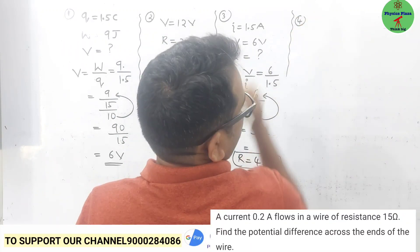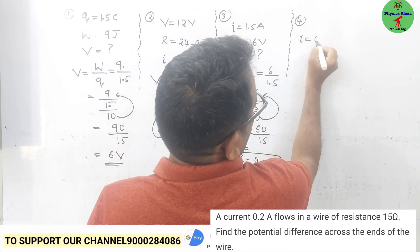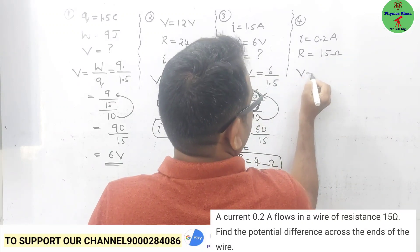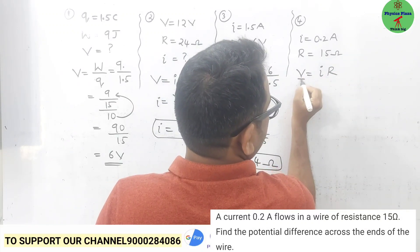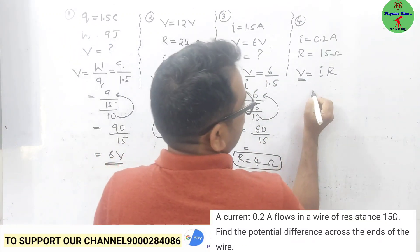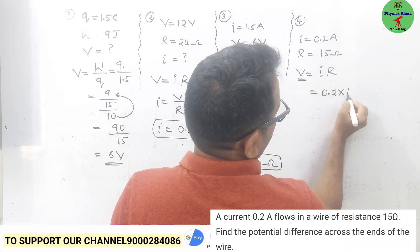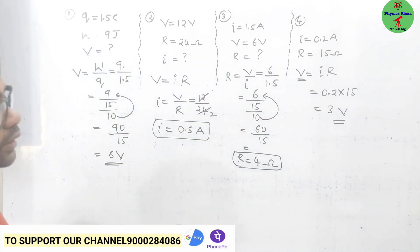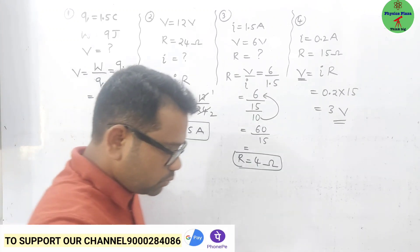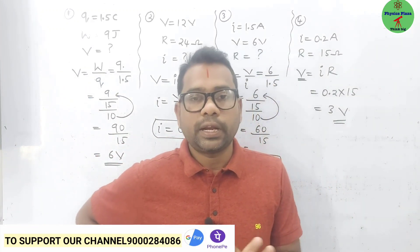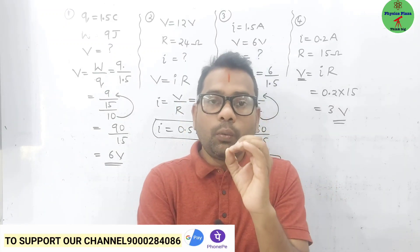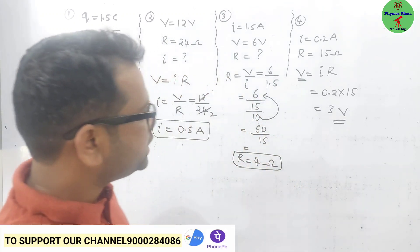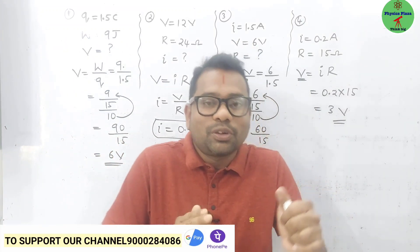Fourth numerical: a current of 0.2 ampere is given and resistance is 15 ohm. They are asking us to calculate the potential difference. Directly applying Ohm's law: V = IR = 0.2 × 15 = 3 volt. This is how we need to calculate. Just know the formulas, how they are related, and when applying to a numerical, think about what data is given.